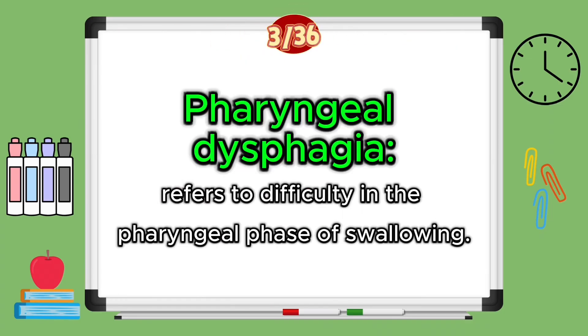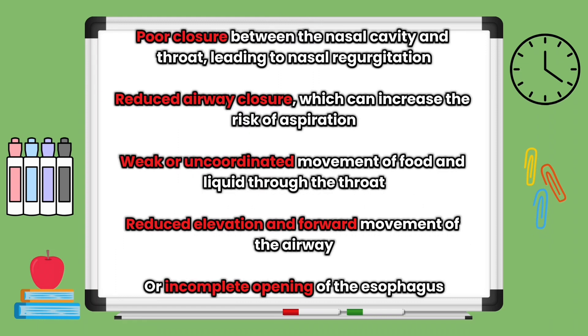Pharyngeal dysphagia refers to difficulty in the pharyngeal phase of swallowing, and this may occur due to poor closure between the nasal cavity and throat leading to nasal regurgitation, reduced airway closure which can increase the risk of aspiration, weak or uncoordinated movement of food and liquid through the throat, reduced elevation and forward movement of your airway, or incomplete opening of your esophagus.